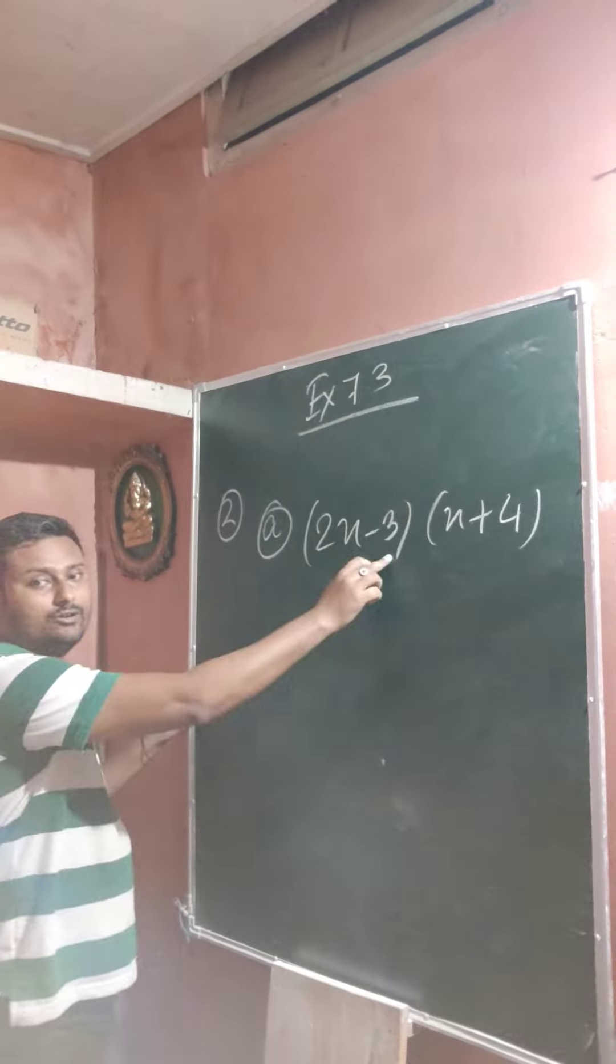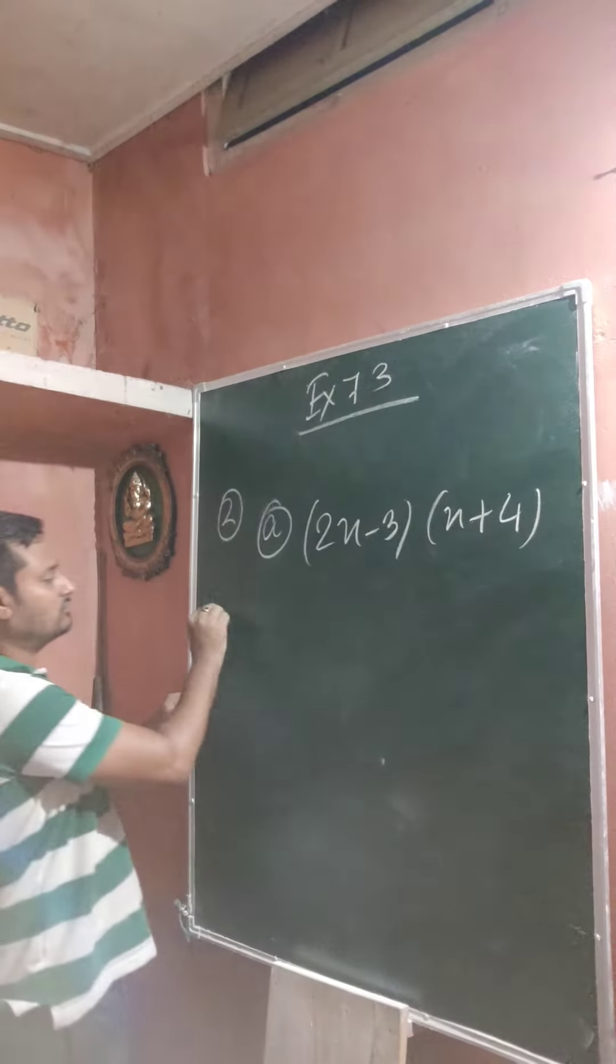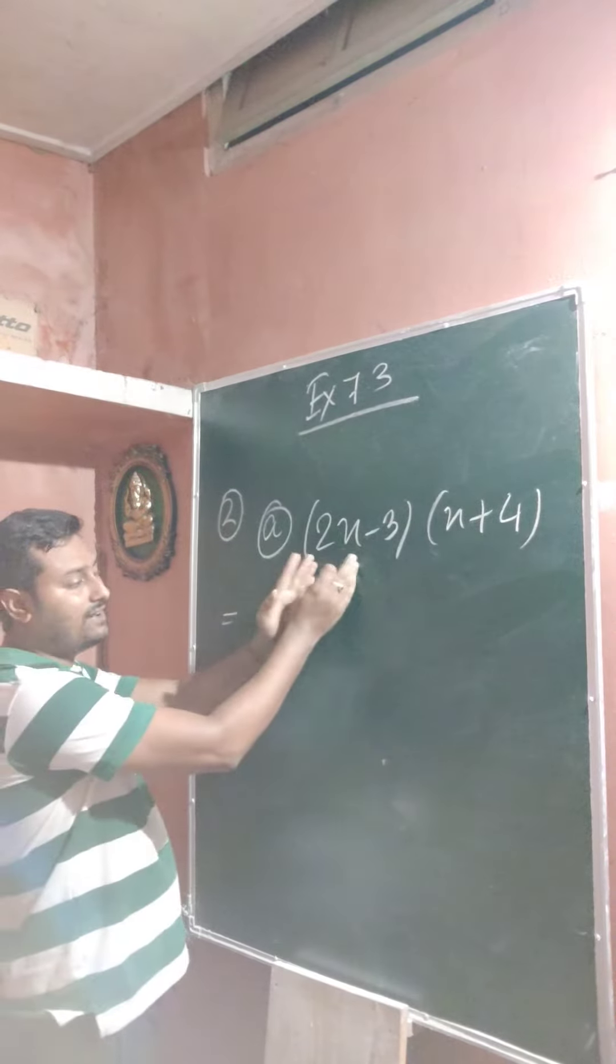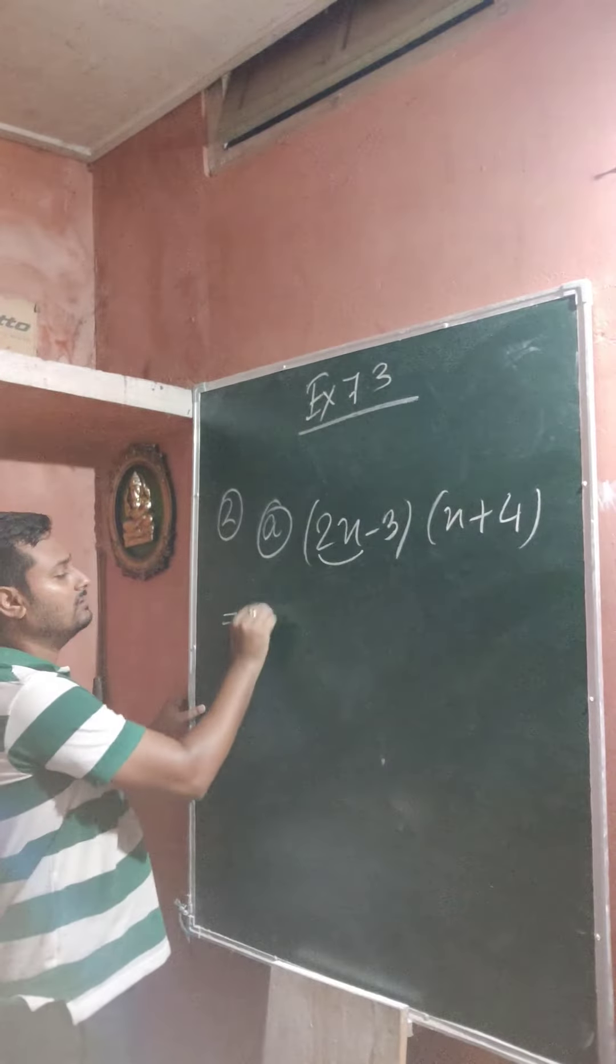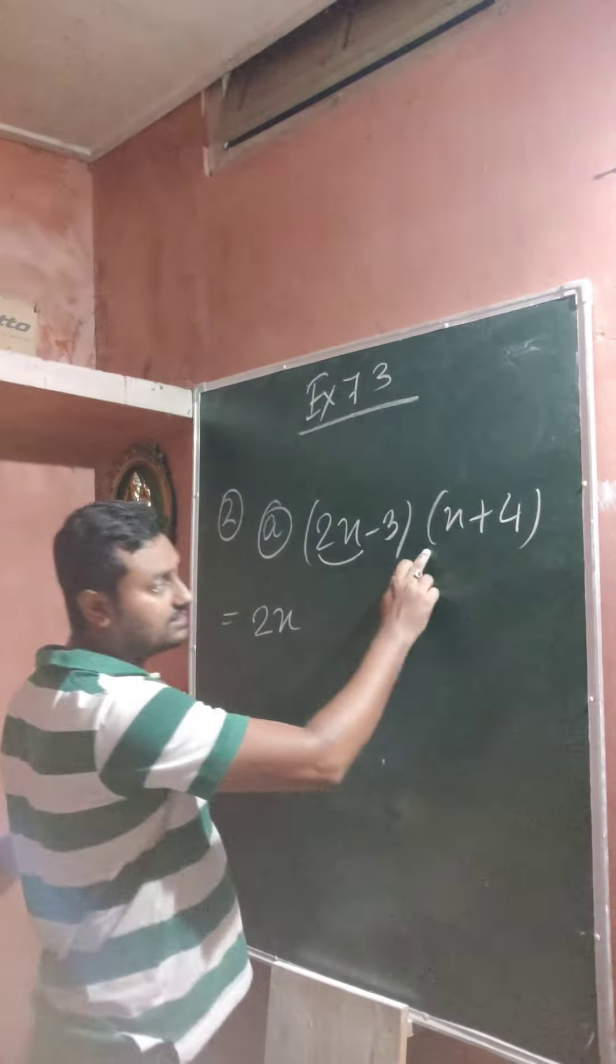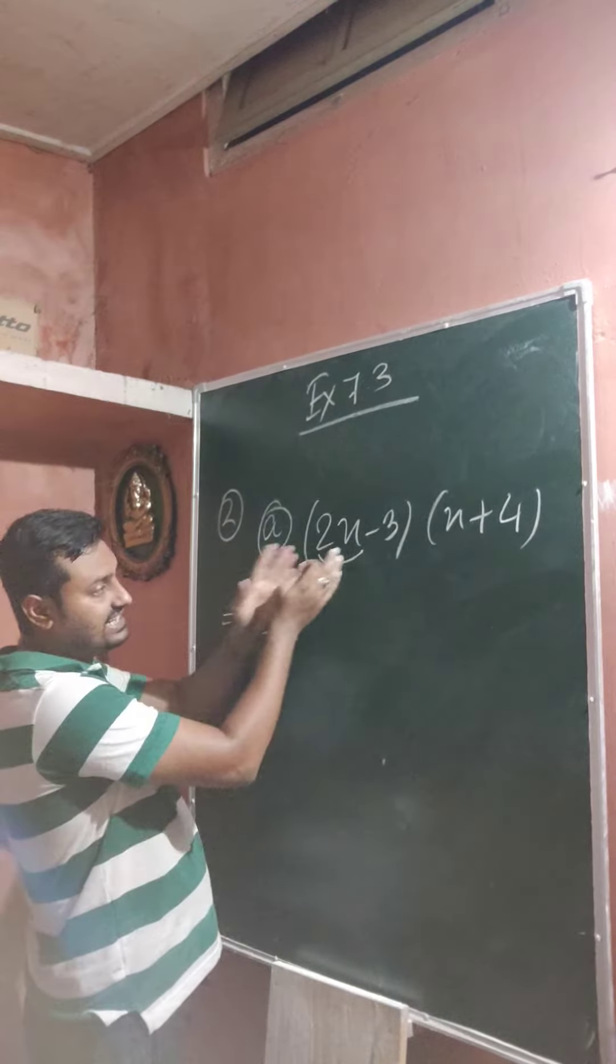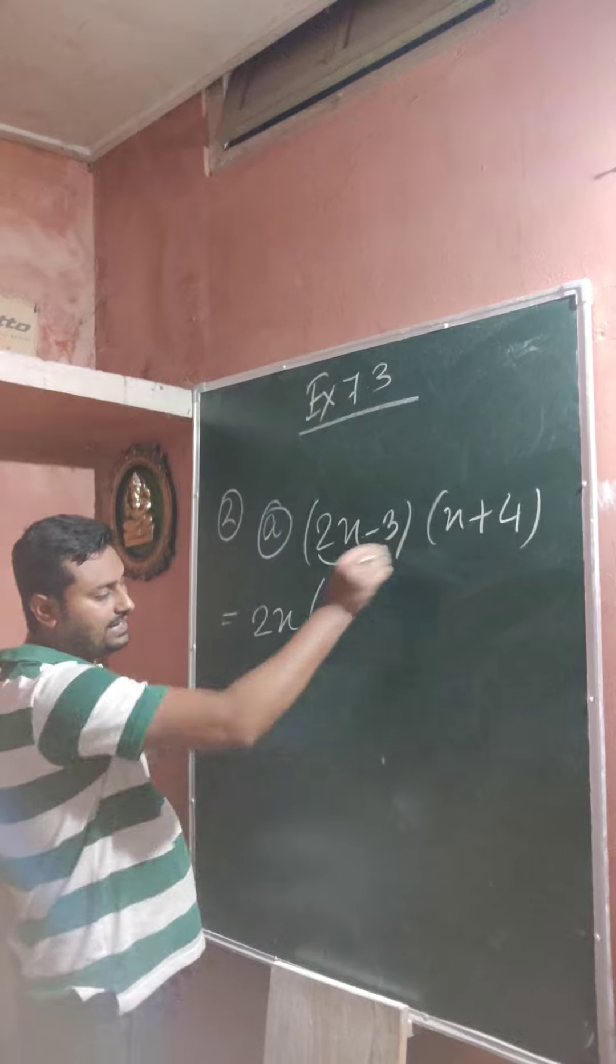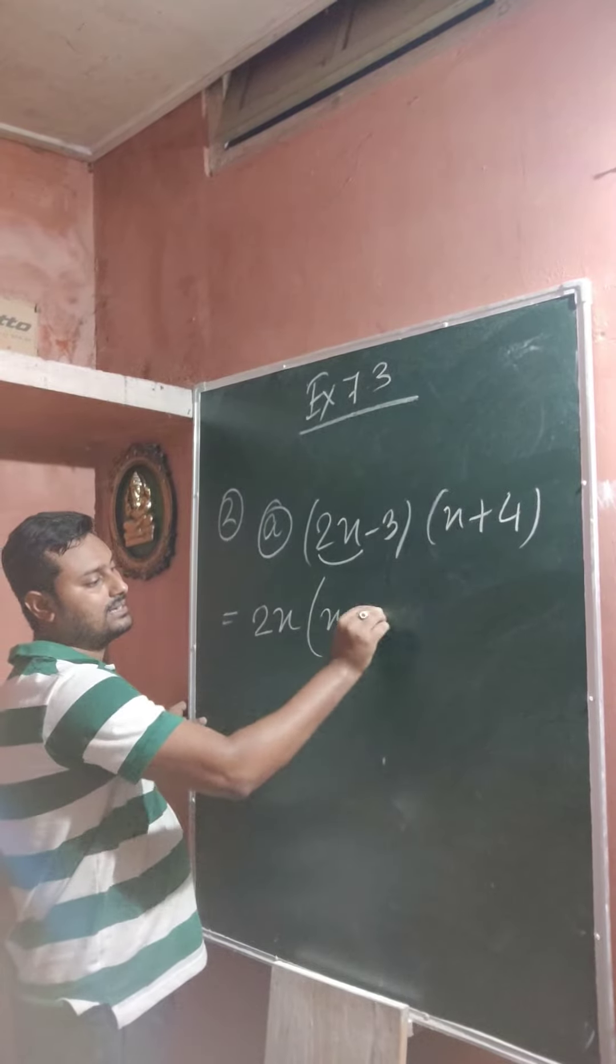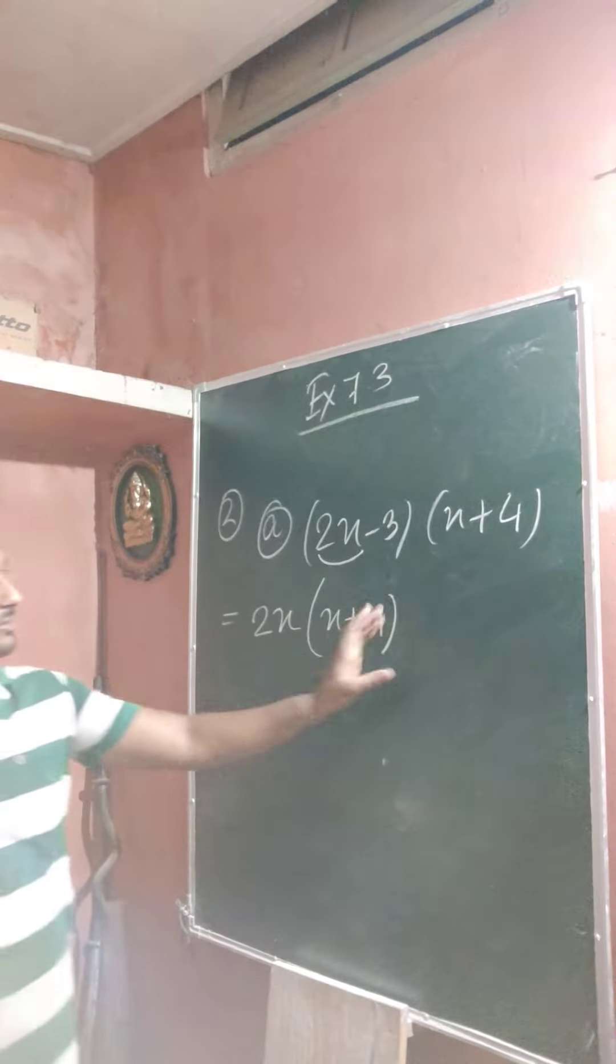So 2 term that means binomial. In this case you just take the first term here. First this one, 2x. Multiplication. So you just take the first term and multiply the remaining second part. 2x whole into x plus 4.